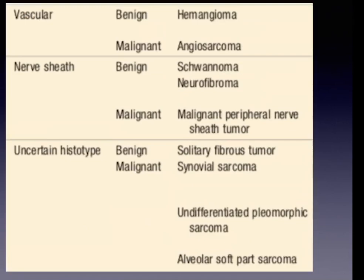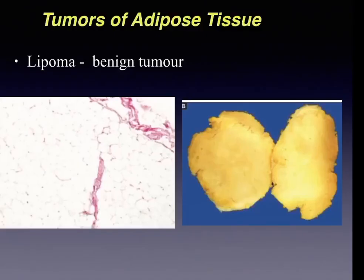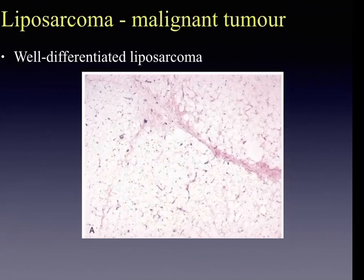Lipoma usually arises in the subcutis of the proximal extremities and trunk. It appears as a well-encapsulated mass of mature adipocytes; grossly it is a solid yellowish soft tissue mass. Microscopically it shows sheets of mature adipocytes. Lipomas are usually cured by simple excision.